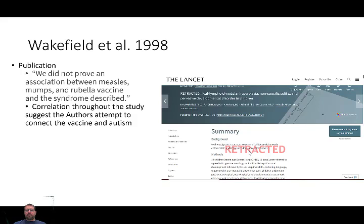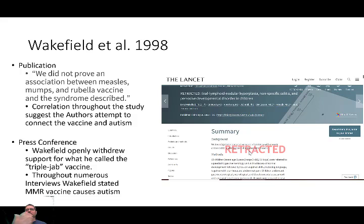Standing alone, the paper would probably have been just fine — no one would have had a major issue with it, except for its extremely flawed methodology. The discussion probably wouldn't have raised too many eyes until Andrew Wakefield himself started doing press conferences right as the publication came out. He wanted the word out to as many people as possible, so he's doing interviews, and in those interviews he's openly withdrawing support from what he calls 'triple jab' vaccines — the triple vaccine of measles, mumps, and rubella.